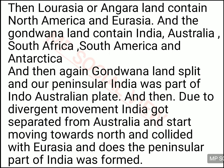India came near the Eurasian plate and collided with it — the convergent movement took place. When the two plates come close to each other and collide, the part of the Indo-Australian plate, that is the peninsular India, got collided with the Eurasian plate, and this way our peninsular plateau came into existence.